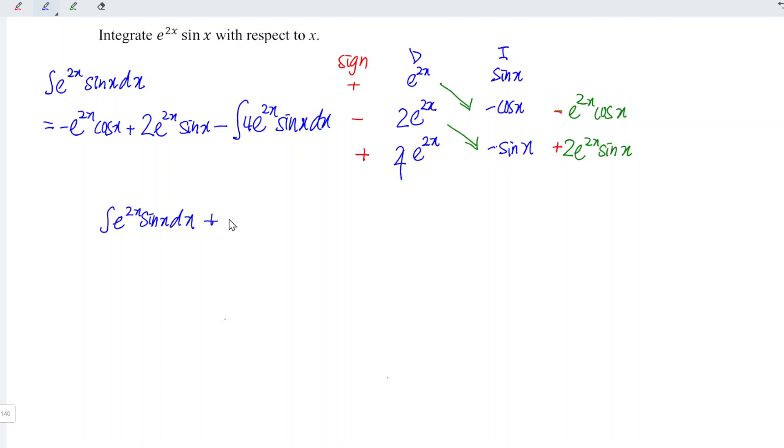We can take out the constant 4 and integrate e to the power of 2x sin x with respect to x. And this is equal to the remaining terms. So we have minus e to the power of 2x cos x plus 2e to the power of 2x sin x.